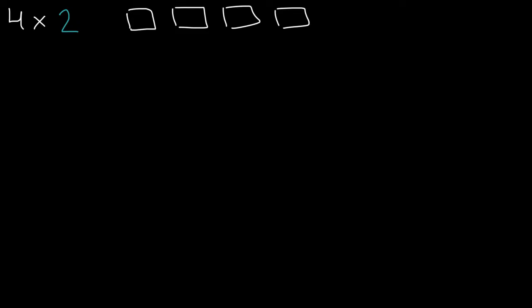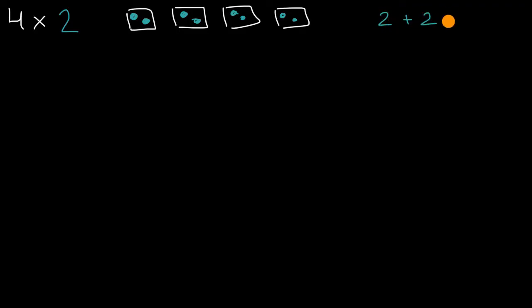So we could have four groups — one group, two groups, three groups, and four groups — and each of them have two of something. I'll just put two little circles here. So you have two there, two there, two there, and two there. You could also view that as four twos, or four twos added together.